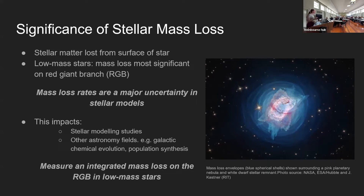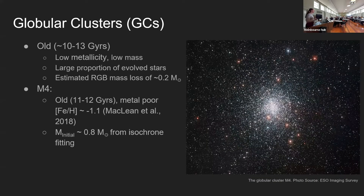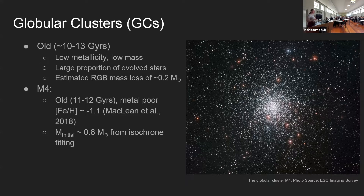One of the best objects to study this are globular clusters. A globular cluster is a really old, gravitationally bound stellar grouping, and due to their old age, all the stars are low metallicity and low mass, and they're in a variety of evolutionary stages. This makes globular clusters the perfect objects to study stellar evolution. From previous studies we know there is an estimated RGB mass loss of about 0.2 solar masses, which I use as a consistency check in my study.